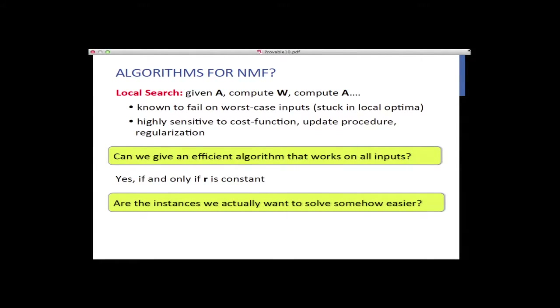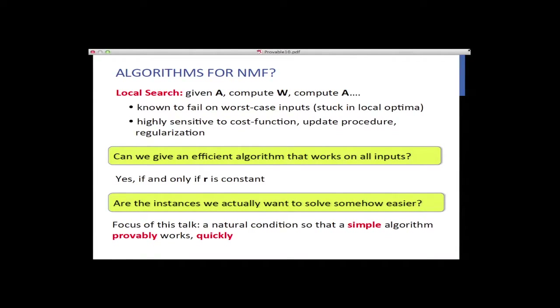Since worst-case analysis is so pessimistic, we should ask instead: what makes these problems easy in practice? What makes real instances avoid the hard gadgets used to encode 3-SAT? The main point of this talk is to give a natural condition on NMF — which I think is the right condition for topic modeling — that yields a simple algorithm with provable guarantees, running in roughly quadratic time, that beats state-of-the-art topic modeling toolkits.